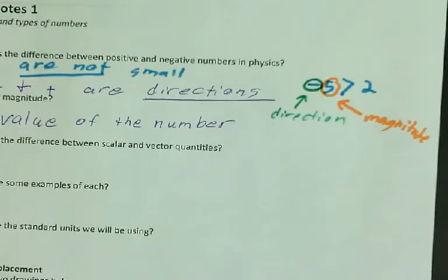So this is why negative five is bigger than two, because the negative is the direction and the five is the magnitude. A magnitude of five is larger than a magnitude of two, because two is the value of the number. Five is the value of the number.